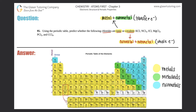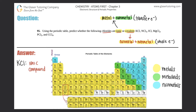Is KCl an ionic compound or a covalent compound? Potassium is a metal — it's in the yellow section of the periodic table. Since potassium is a metal, that automatically makes this an ionic compound. I don't even need to check chlorine, because the presence of a metal makes it ionic.